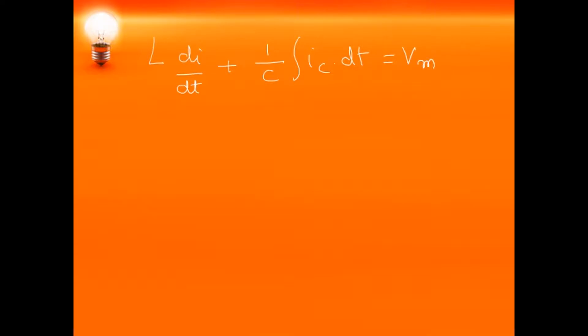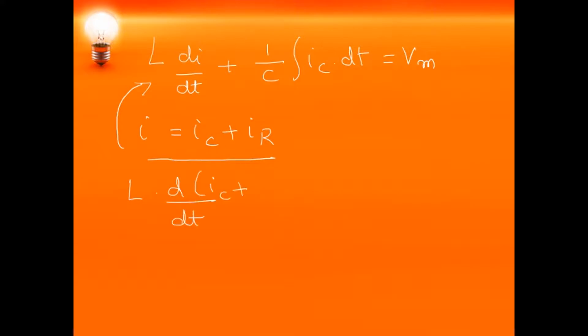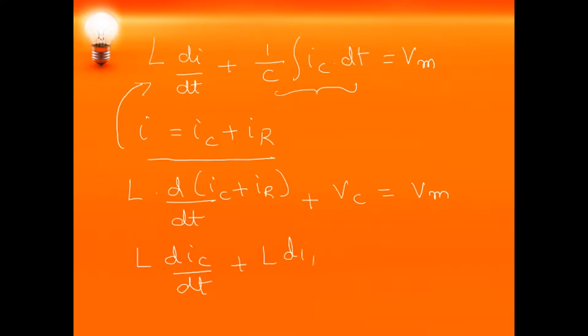Rewriting the equations: L·(di/dt) + (1/C)·∫ic dt = Vm, and I = ic + ir. Substituting the KCL expression into the KVL equation, we get: L·d(ic + ir)/dt + Vc = Vm, which expands to L·(dic/dt) + L·(dir/dt) + Vc = Vm.